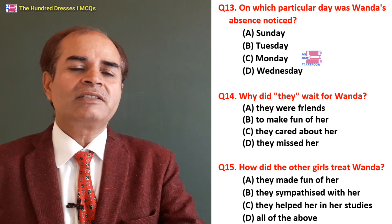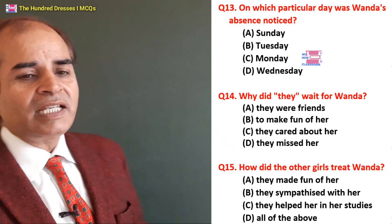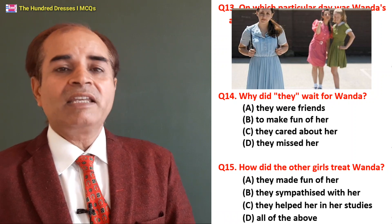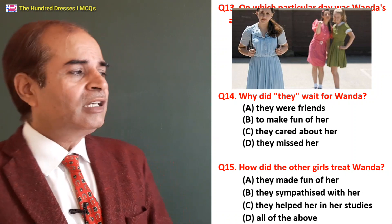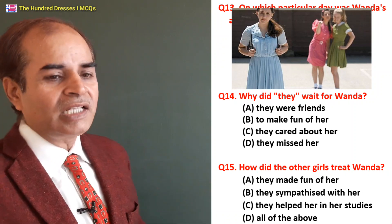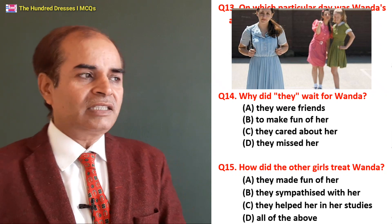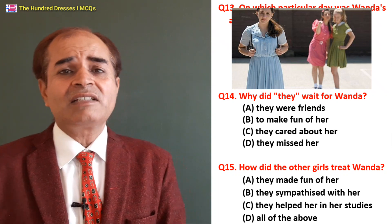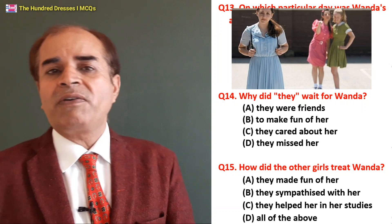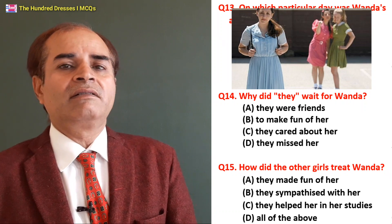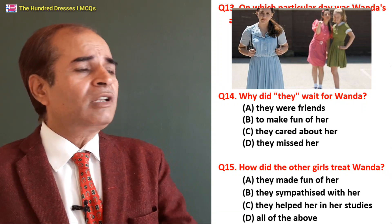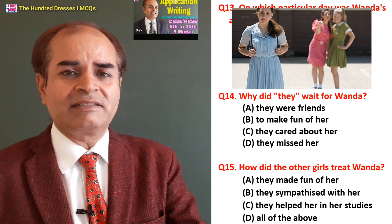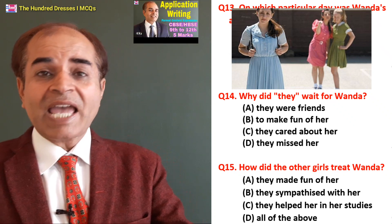Fourteenth question: Why did they wait for Wanda? To welcome her? Because they were friends? To make fun of her? Because they missed her? B is the right answer — just to make fun of her. They were habitual of asking her the same question about how many dresses she had. The game was started by Peggy.